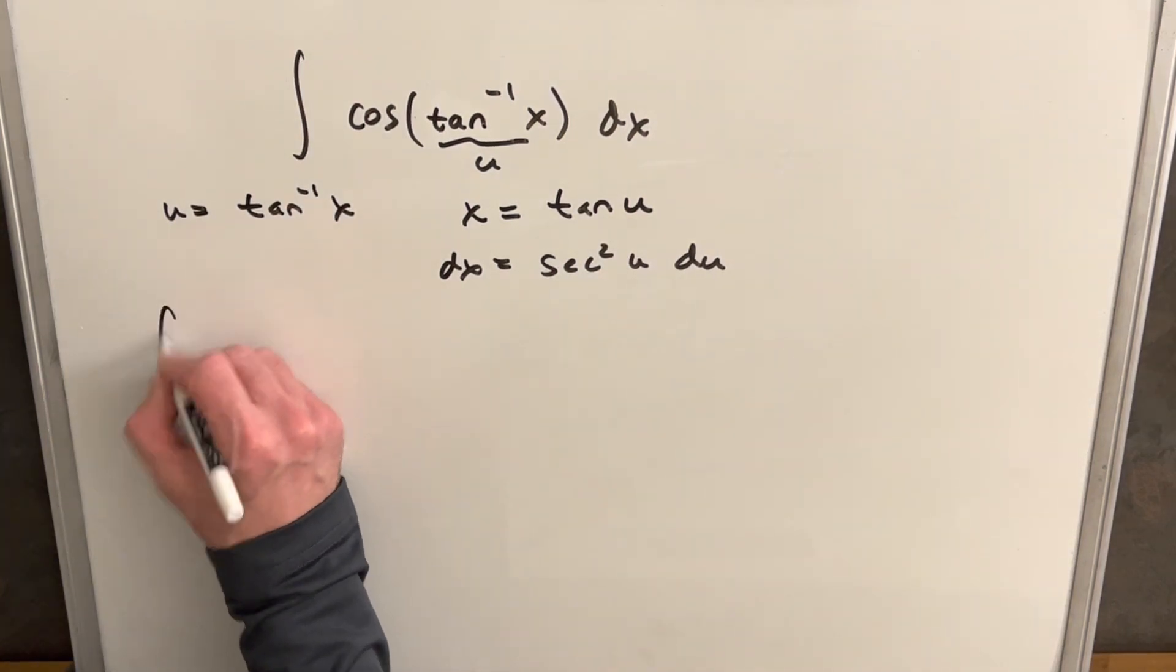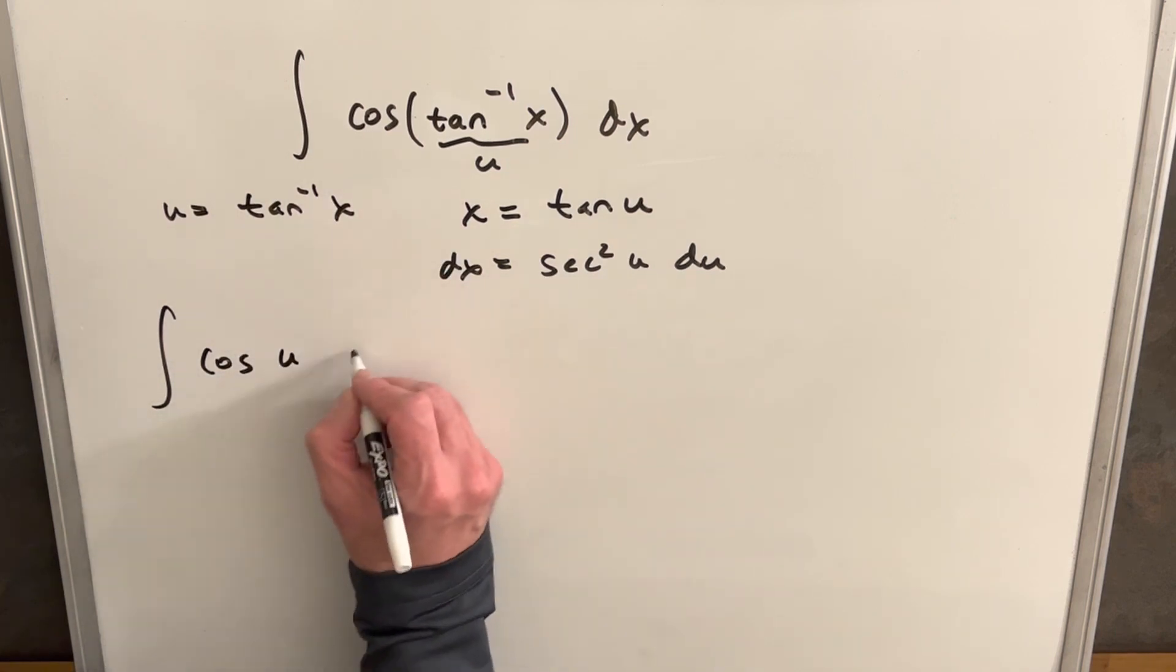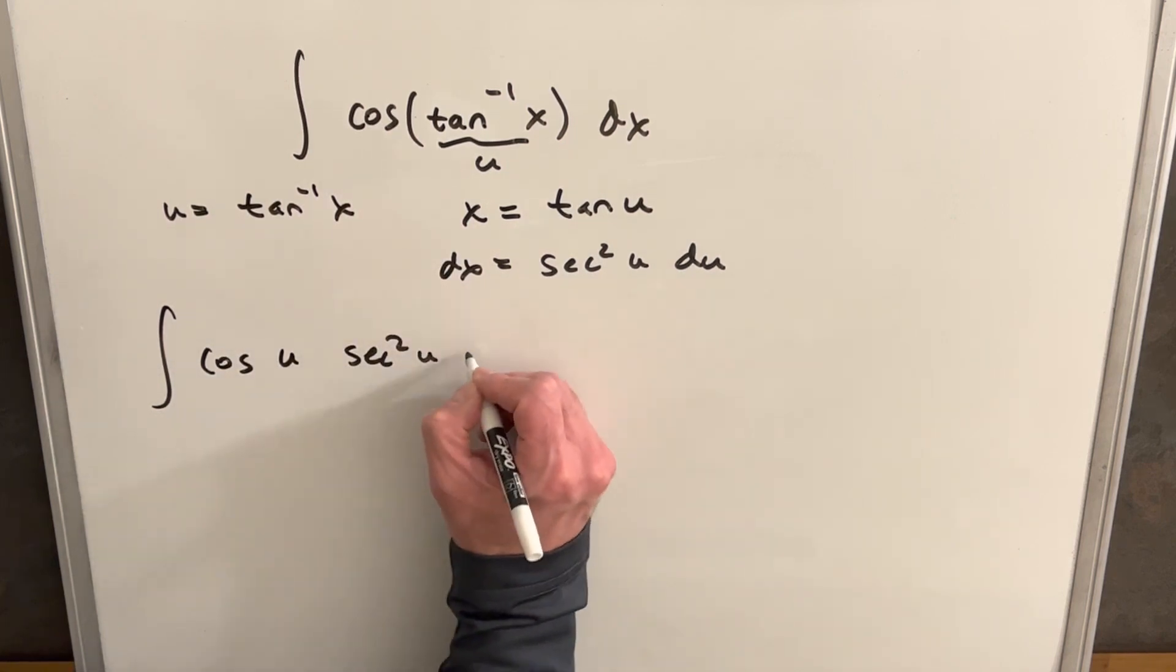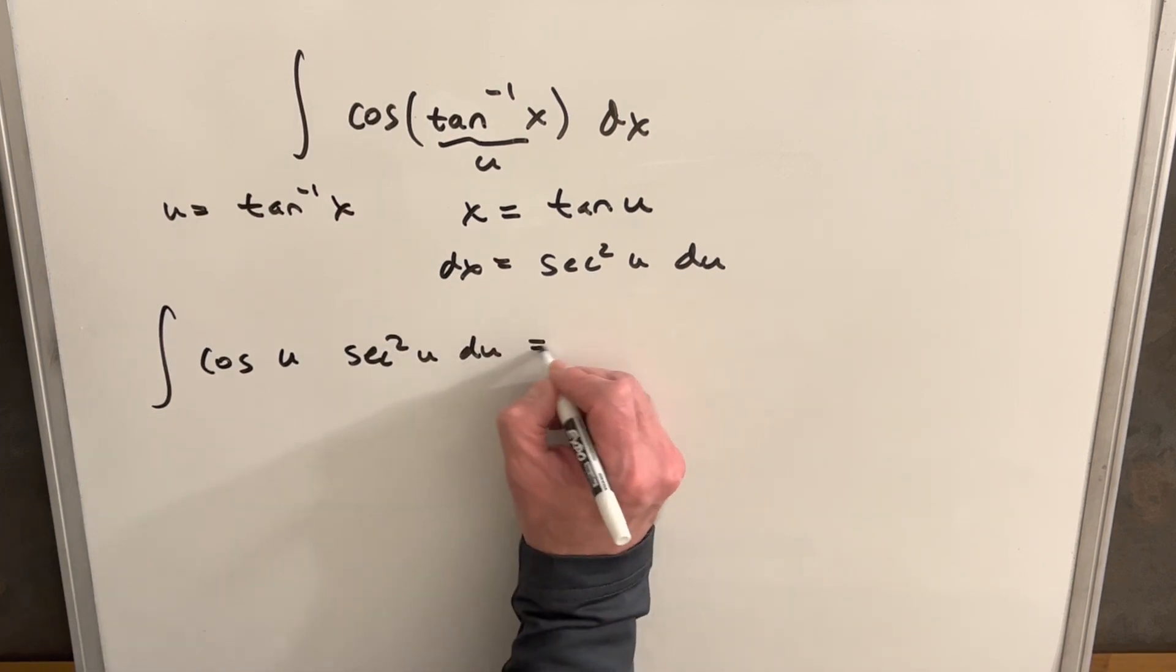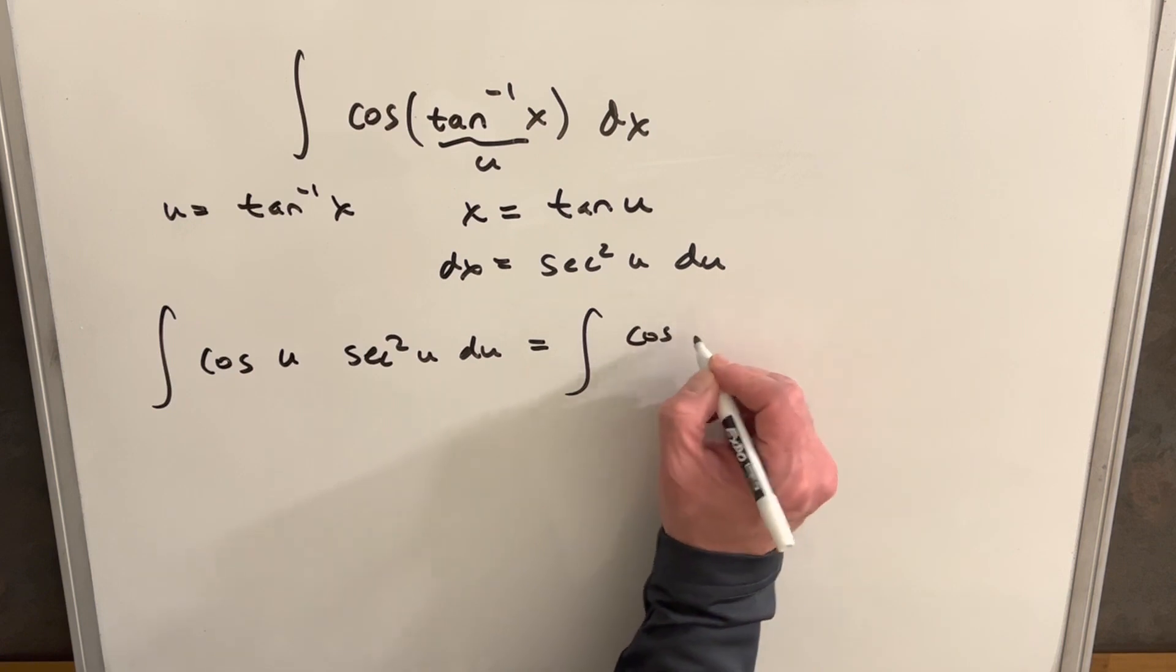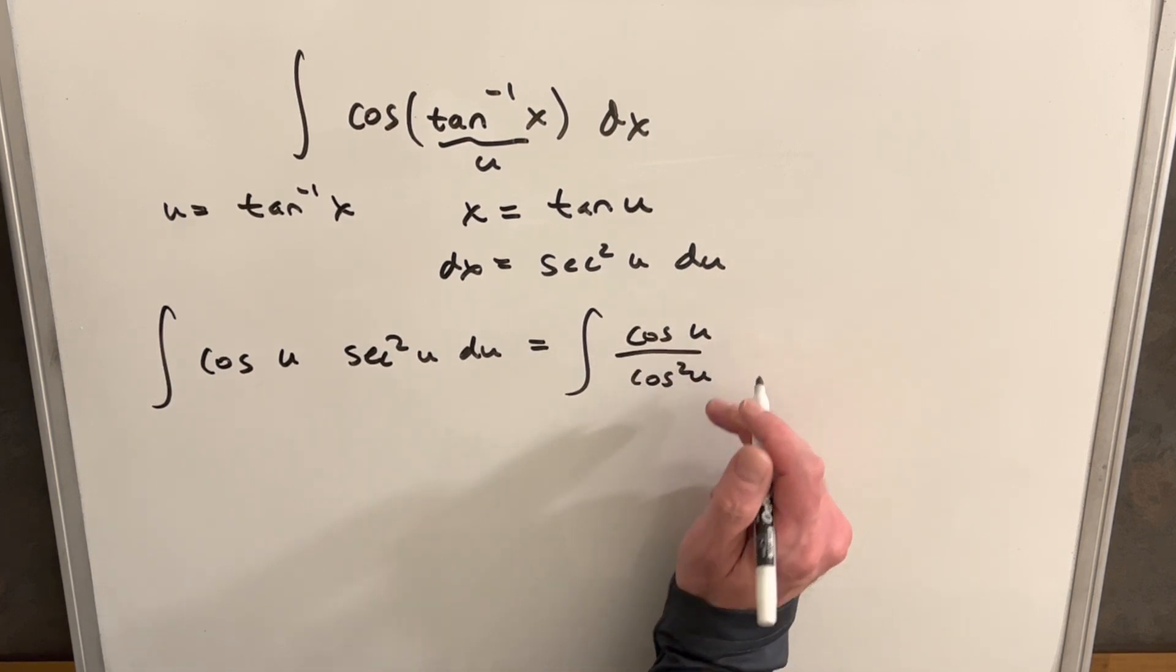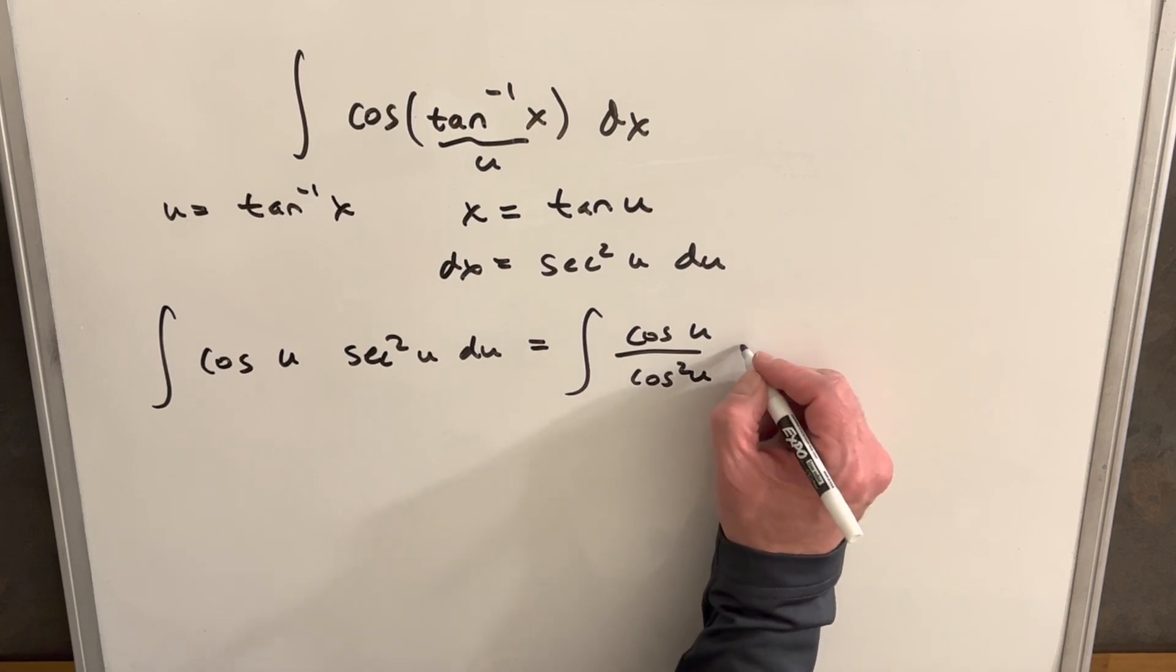Okay so we'll make the substitution. So we're going to have cosine with u and our dx is going to be secant squared u du. But notice secant is one over cosine so we can rewrite this as cosine of u over cosine squared u, putting our secant essentially in the denominator.